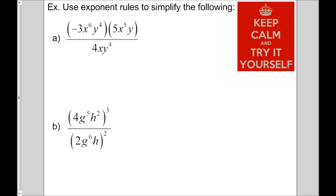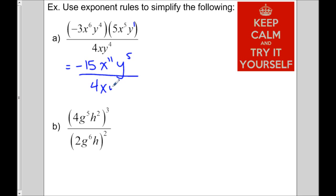For part a, multiply the two expressions in the numerator first: negative 3 × 5 = negative 15; x⁶ × x⁵ = x¹¹; y⁴ × y (invisible exponent 1) gives y⁵ since we add exponents. The denominator is 4xy⁴. Since 15 and 4 don't divide evenly, we leave it as a fraction. For x: 11 minus 1 = x¹⁰. For y: 5 minus 4 = 1, so we just write y.